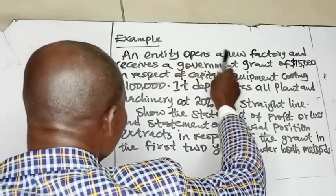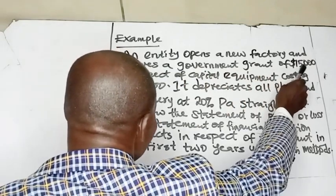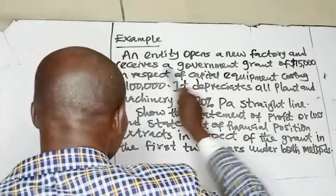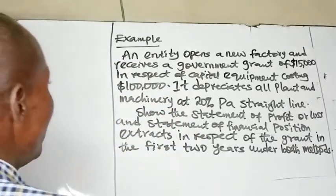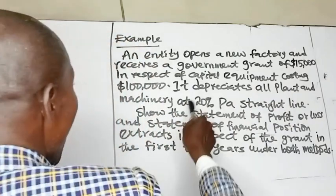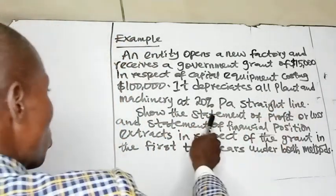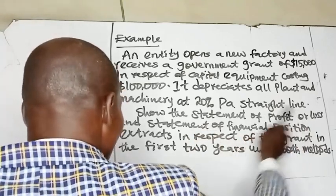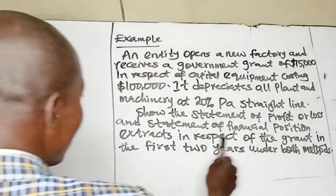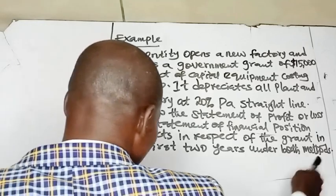An entity opens a new factory and receives a government grant of $15,000 in respect of capital equipment costing $100,000. It depreciates all plant and machinery at 20% per annum straight line. Show the statement of profit or loss and statement of financial position extracts in respect of the grant in the first two years under both methods.